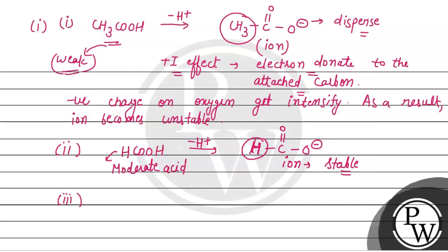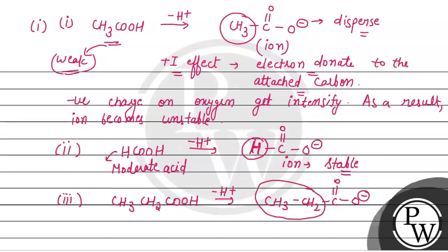Next तीसरा compound है CH3CH2COOH। H-positive lose करने के बाद CH3CH2COO negative बनेगा। यहां पे alkyl group और बड़ा हो गया, क्योंकि यहां पे ethyl group लगा है। चाहे methyl हो चाहे ethyl हो, यह plus I effect शो करेगा। Plus I effect की वजह से electron donate करेगा और ion को unstable करेगा। तो इसका मतलब यह weakest acid हो गया, क्योंकि इसमें जो alkyl group लगा है वो बड़ा है।